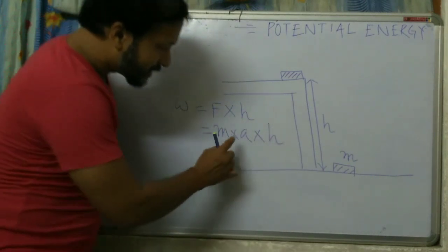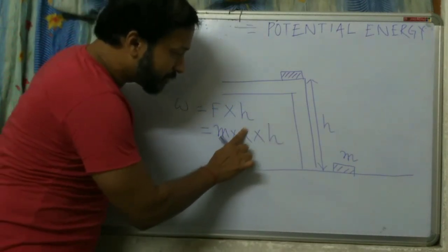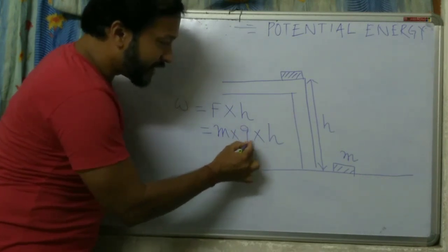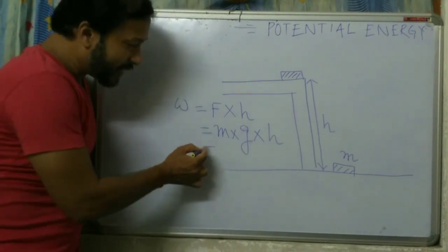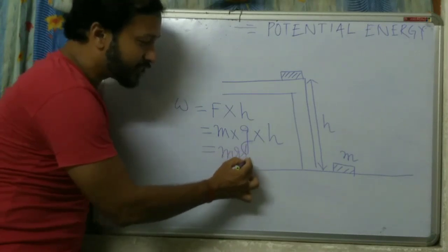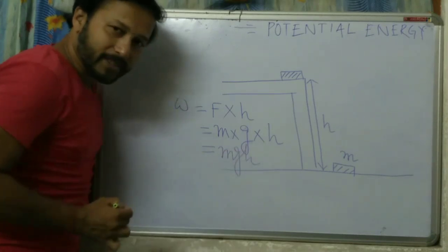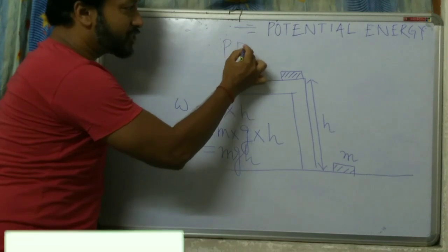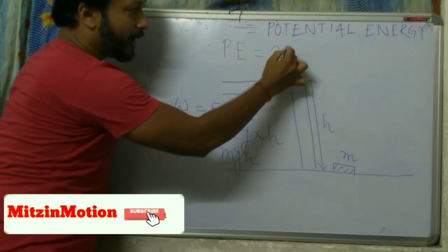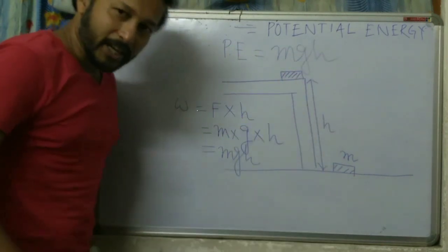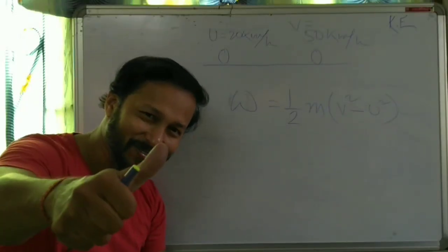Here the object is moving vertically upward, so we should consider gravity. So instead of acceleration, I write g. What I am getting is M times G times H. So my potential energy equals M G H. Thank you.